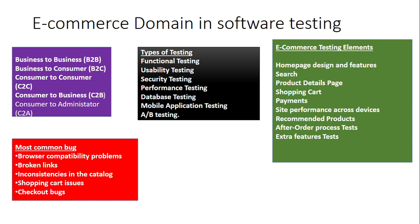Some common bugs found in e-commerce domain testing are: browser compatibility problems — for example, an application opens fine in Chrome but gives problems in Edge; broken links — a product is not available and clicking on it breaks the link so the detail cannot be viewed; and inconsistency in catalog, shopping cart issues, and checkout bugs.